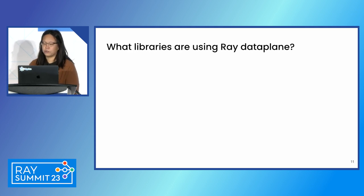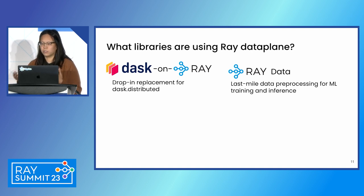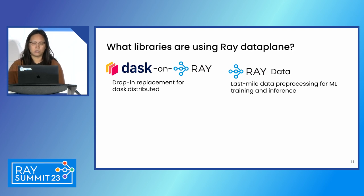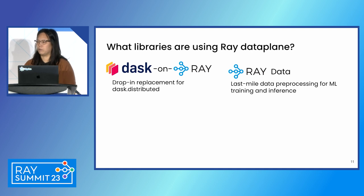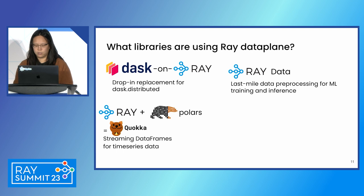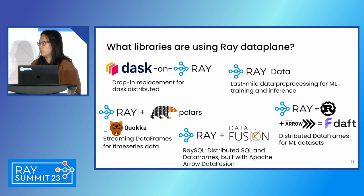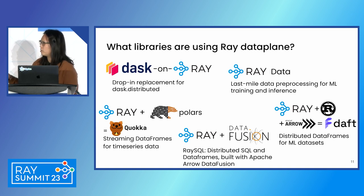I also wanted to go through some of the libraries that are using the Ray data plane today. I already mentioned Dask on Ray, which is a drop-in replacement for Dask that uses the Ray data plane as its backend. There's also Ray Data — you've probably heard about this throughout this summit — which is basically meant to do last-mile data pre-processing for both training and batch inference workloads. Community-contributed libraries include the Quokka library combining Ray and Polars for streaming time series data frames, the Daft library for distributed data frames for ML data sets, and Ray SQL, a distributed SQL engine built with Ray and Apache Arrow.